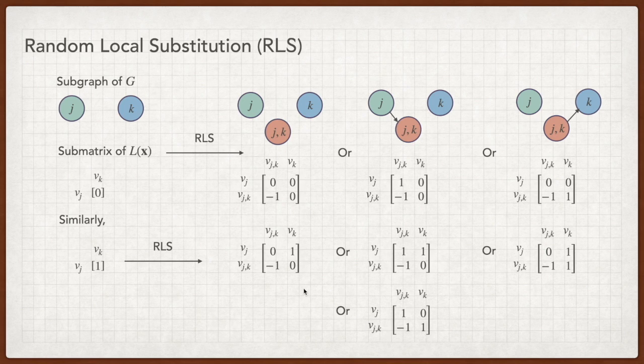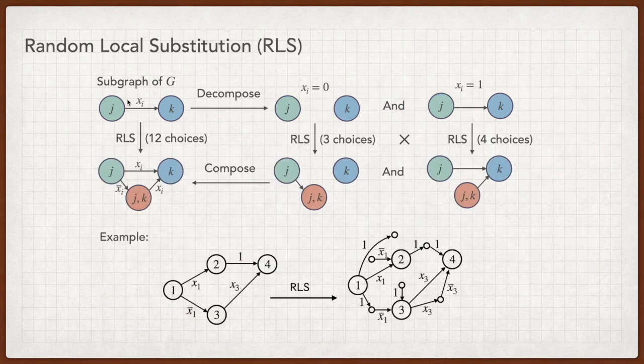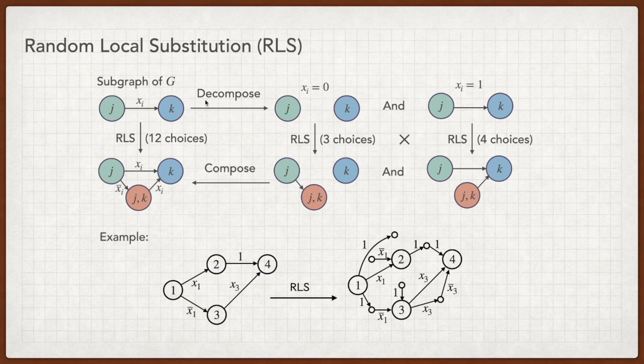Compared to the aforementioned case, we have one more choice, as we can delete the edge between VJ and VK, and let the path go across the intermediate node. If the label between VJ and VK is XI, we can decompose XI into XI equals 0, which has three choices, and XI equals 1, which has four choices. Then we can compose them together.